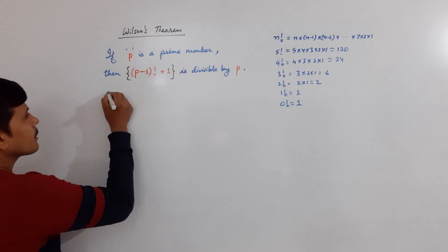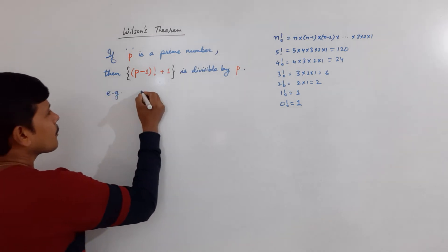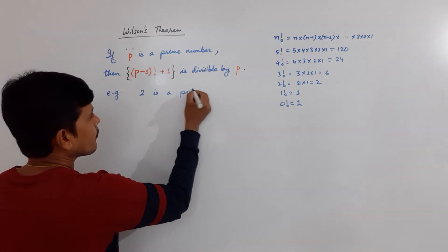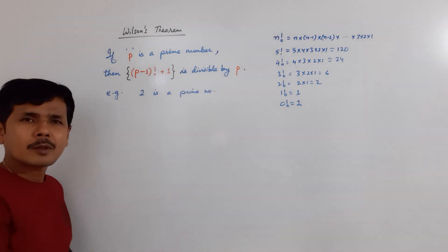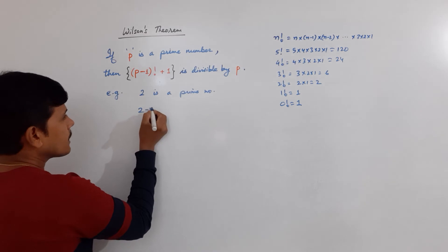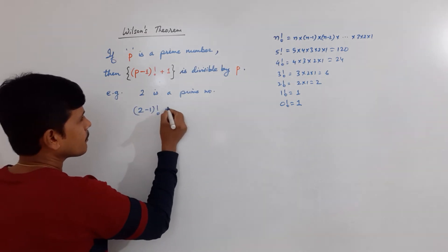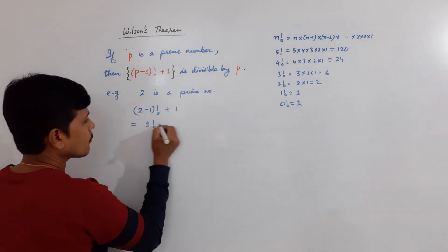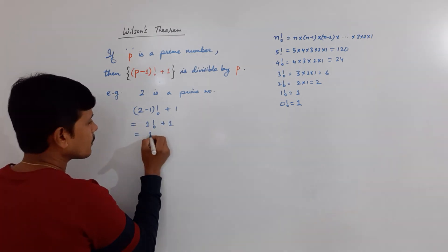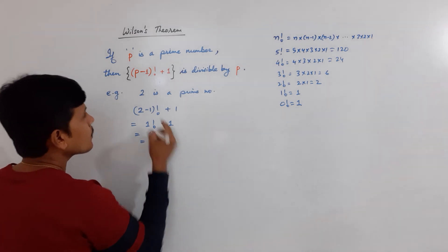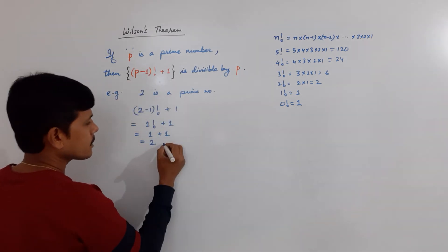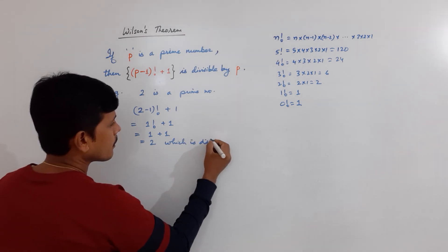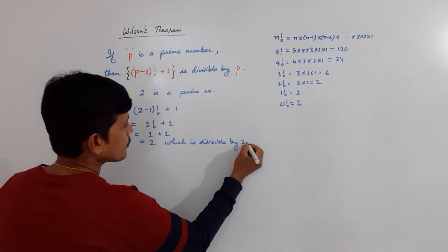I am taking prime number 2. Well, 2 minus 1, its factorial, plus 1. Let us check. 2 minus 1 means 1, factorial of 1 plus 1. Factorial of 1 means 1, and 1 plus 1 is equal to 2, which is divisible by 2, isn't it? Which is divisible by 2.